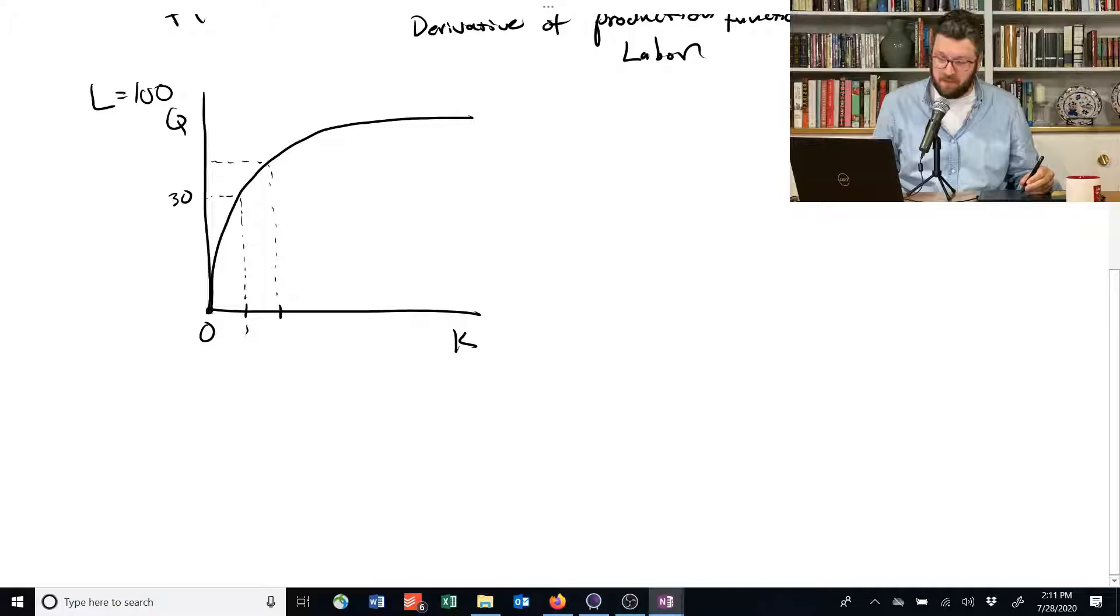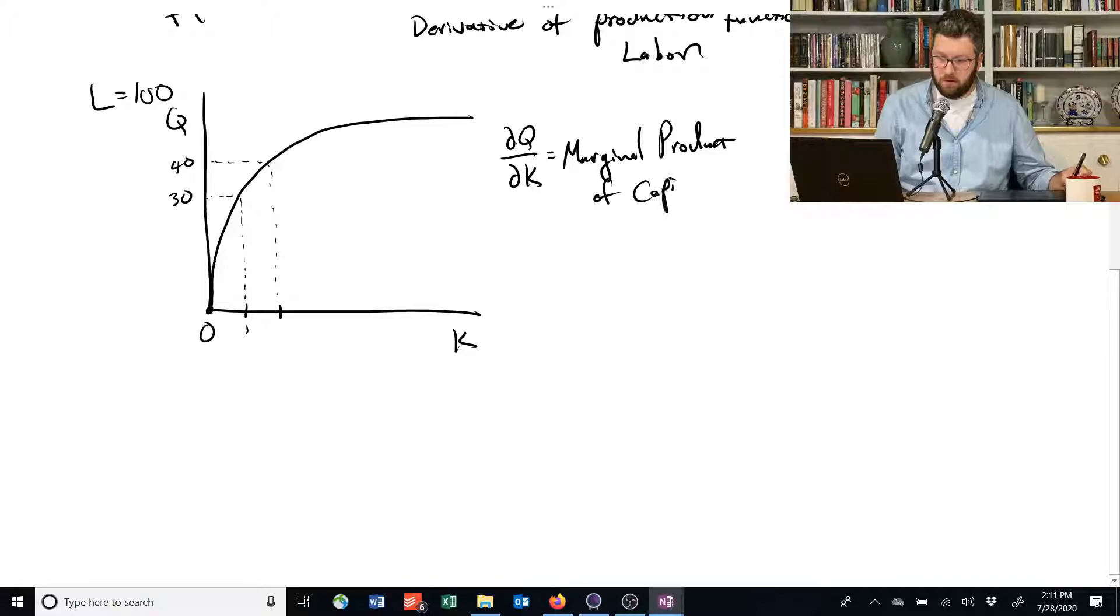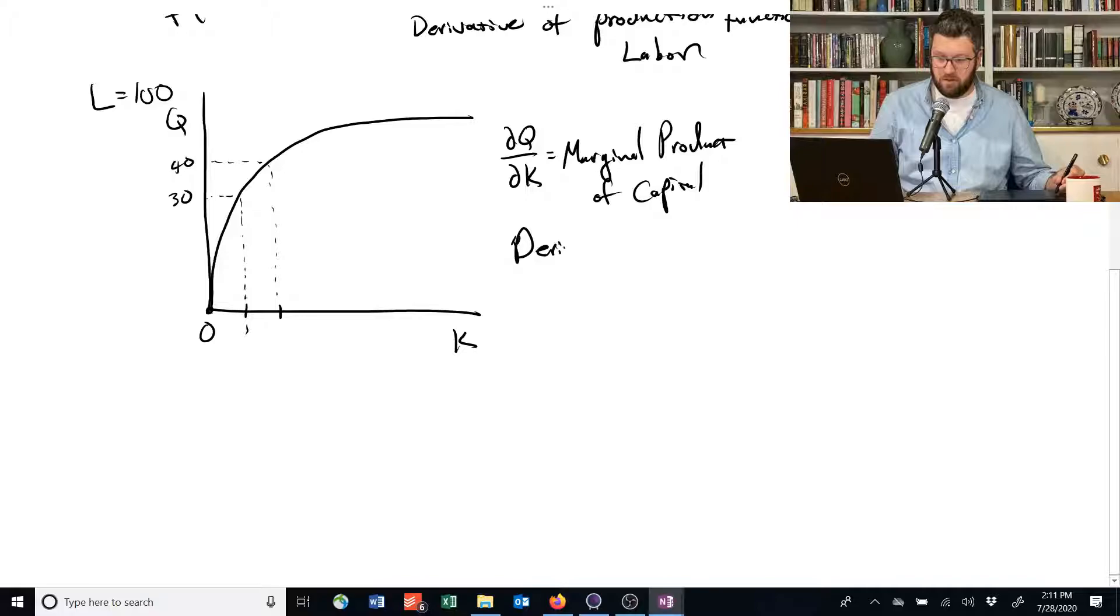Just like we had this derivative with respect to labor, we can take a derivative, the partial derivative with respect to capital, and define something called the marginal product of capital. Like the other one, it's the derivative with respect to capital in this case, instead of labor.